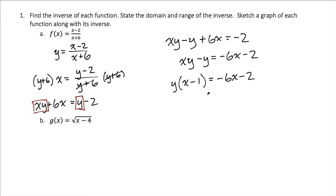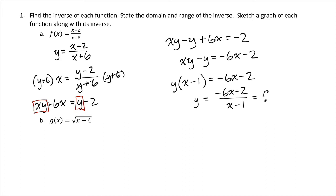We divide both sides by x minus 1, and we have y equals negative 6x minus 2 over x minus 1. Now we've got y by itself. This is our inverse function — this is our f inverse of x.